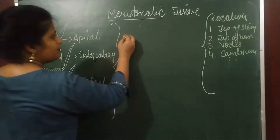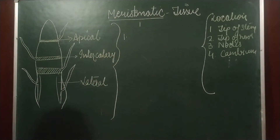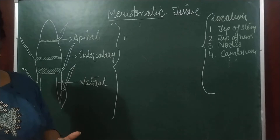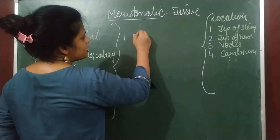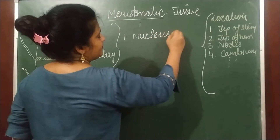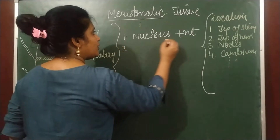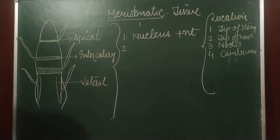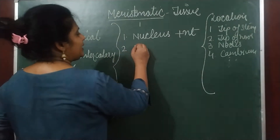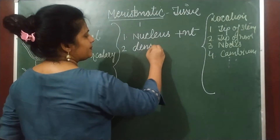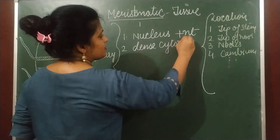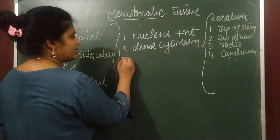Now let's understand the basic characteristics of meristematic tissue. First, since this tissue is responsible for division, a nucleus is required, so nucleus is present. Cytoplasm is abundant, which is required for division because a lot of nutrients are needed — so cytoplasm is very dense. The nucleus is comparatively bigger in size.